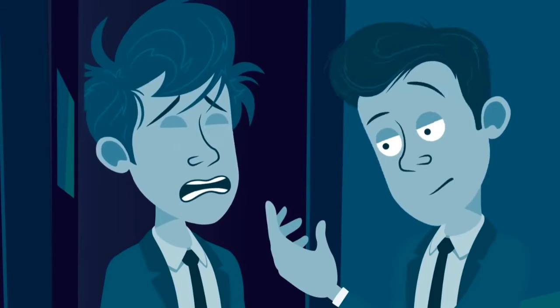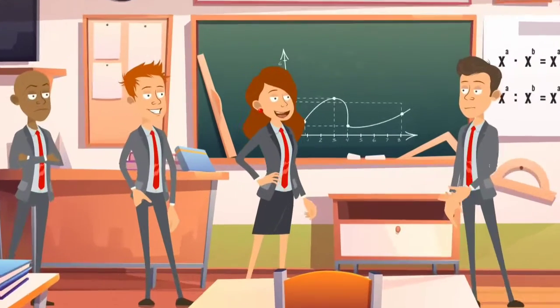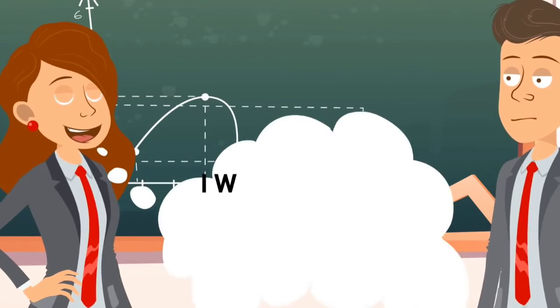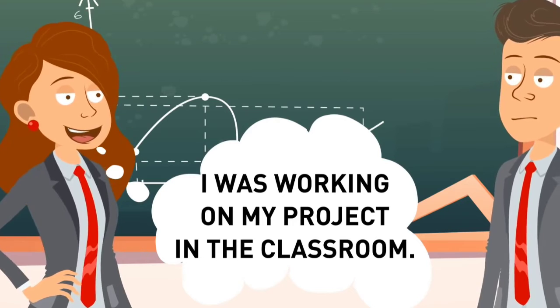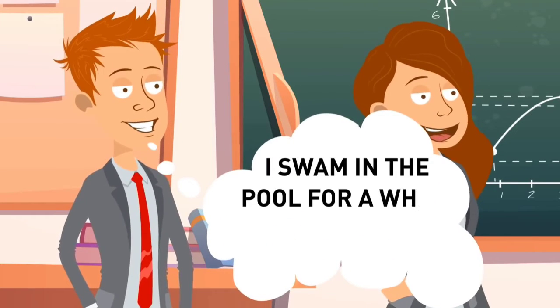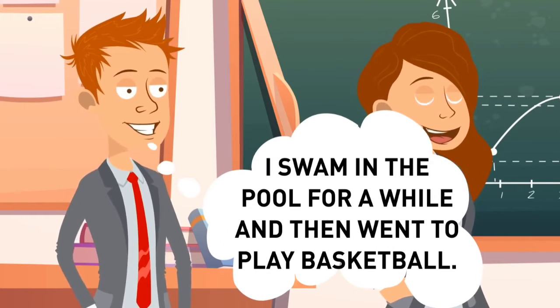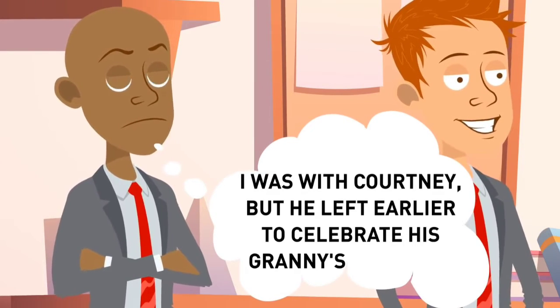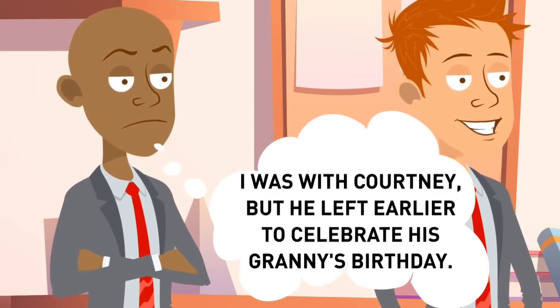Paul promised to find the culprit. The next morning, he questioned his classmates. Courtney said she had been working on her project in the classroom. Josh said, I swam in the pool for a while and then went to play basketball. Bob was with Courtney, but he left earlier to celebrate his granny's birthday with his family.